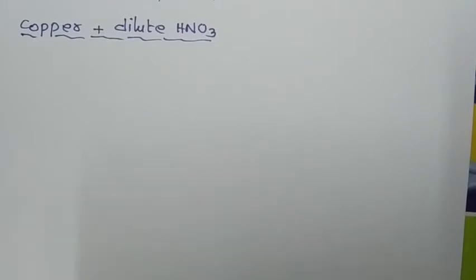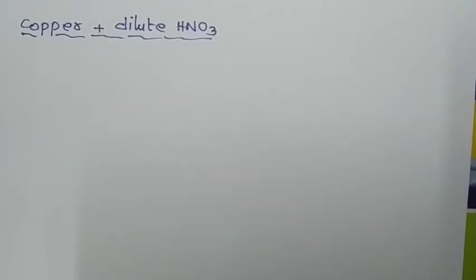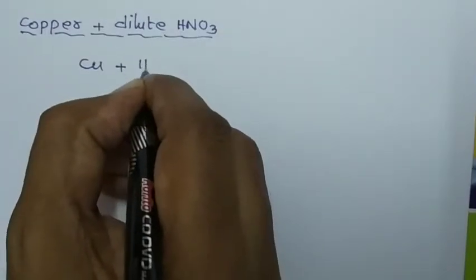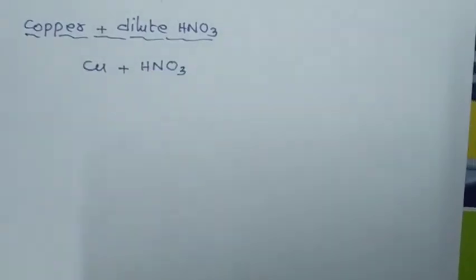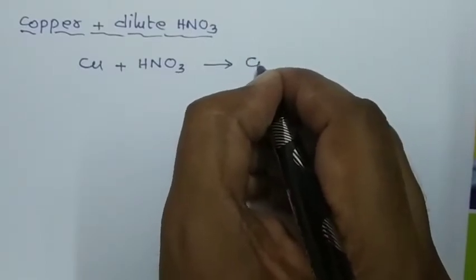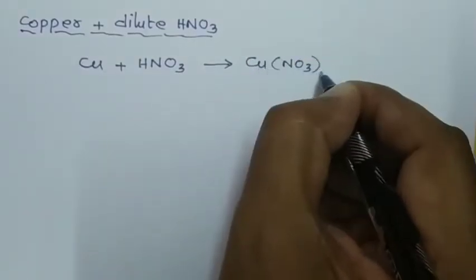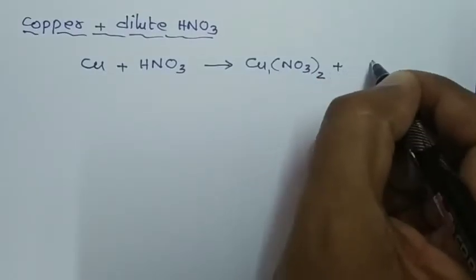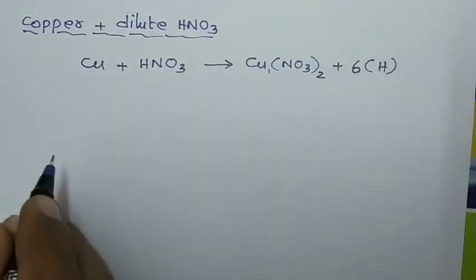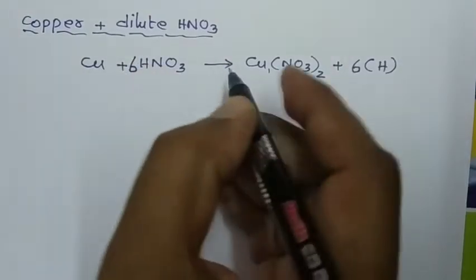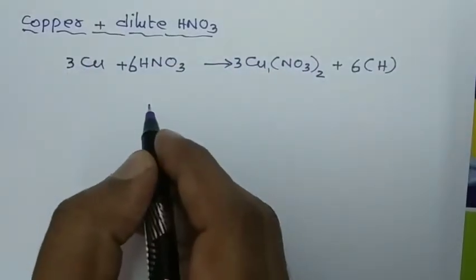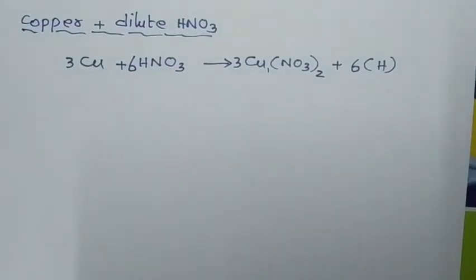Copper first undergoes reaction with dilute nitric acid in three steps. In the first step, the metal copper (Cu) reacts with nitric acid. The reaction of metal with nitric acid gives metal nitrate — copper nitrate Cu(NO₃)₂ (copper valency 2, nitrate valency 1) — along with nascent hydrogen. In the first step, 6 nascent hydrogen are produced, along with 3 Cu and 3 N×2 = 6.